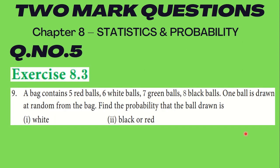Question number 5, exercise 8.32: A bag contains 5 red balls, 6 white balls, 7 green balls, and 8 black balls. One ball is drawn at random from the bag. Find the probability that the ball drawn is white; second, black or red.